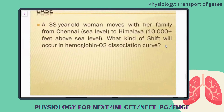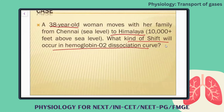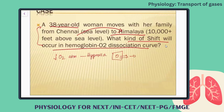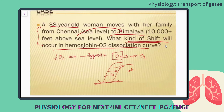Consider this case: a 38-year-old woman moves with her family from Chennai to the Himalayas. What kind of shift will occur in her hemoglobin dissociation curve? Moving from Chennai at sea level to high altitudes, there is a decrease of oxygen in the atmosphere — she encounters hypoxia. The cells are in more and more demand for oxygen. Therefore, the hemoglobin oxygen dissociation curve releases more and more oxygen, and the curve shifts to the right side.